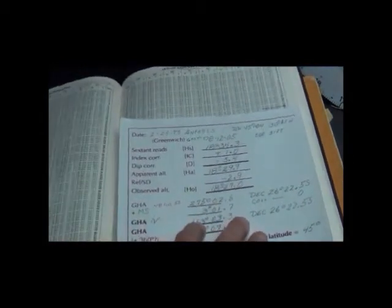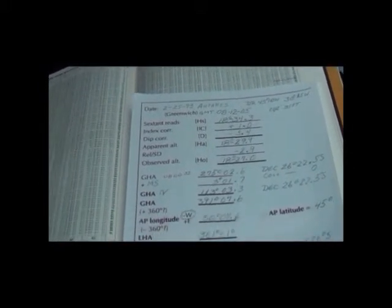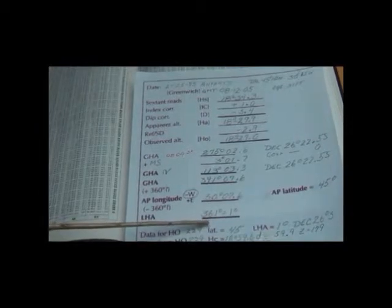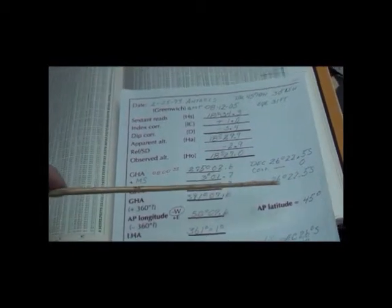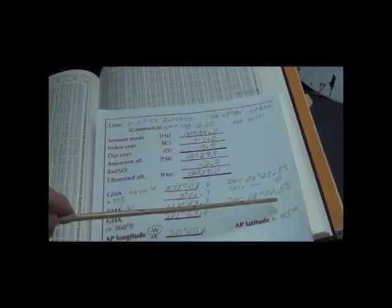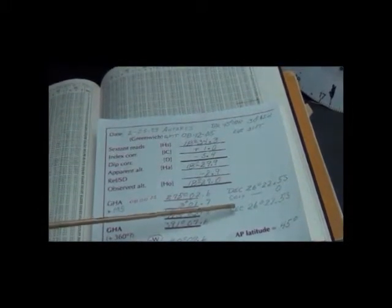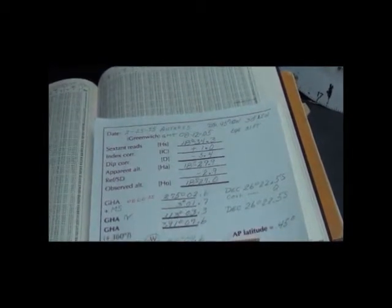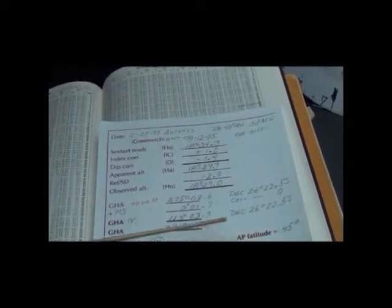We have a lot of information now on the sight form. The sight form tells us that we have what's known as a local hour angle, which means the distance from us to the star along the longitude line is one degree. We know its declination is 26, 22.5. That's pretty well the same declination and latitude, but this is a south declination where our longitude is north. So that means contrary.